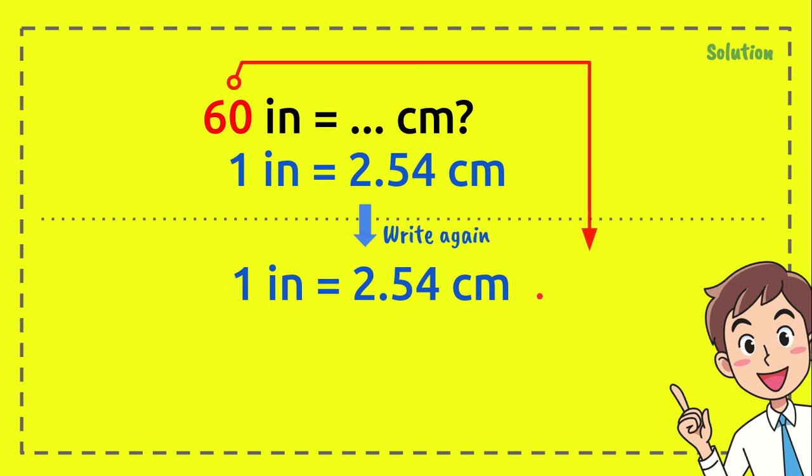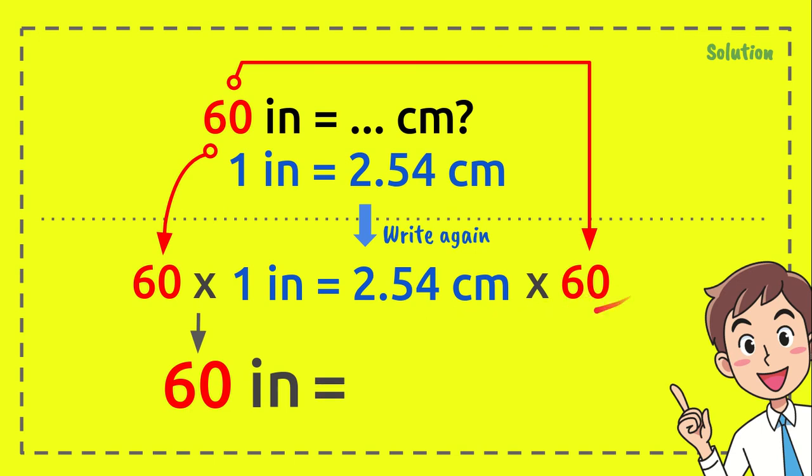So first we multiply this number with 60 and we multiply one inch with 60 as well. Now 60 times one equals 60 inches, and 2.54 centimeters times 60 equals 152.4 centimeters. This is the answer of the question.